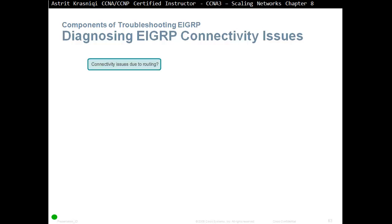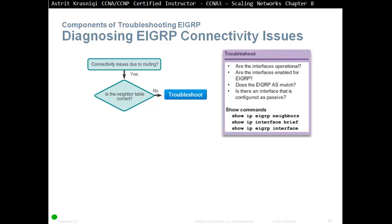Diagnosing EIGRP connectivity issues due to routing. First, is the neighbor table correct? If it's not, we troubleshoot. When a neighbor that's supposed to be in our EIGRP table is missing, we look at the interfaces: are they operational — status up, protocol up? Can we ping the neighbor? Are the interfaces enabled for EIGRP — maybe we have not advertised that interface? Does the EIGRP autonomous system number match? Is any interface configured as passive?